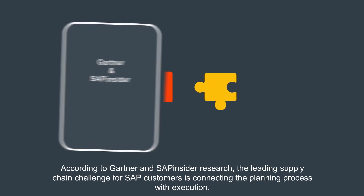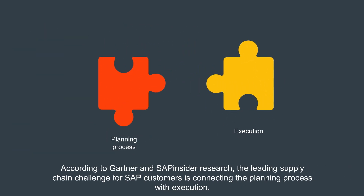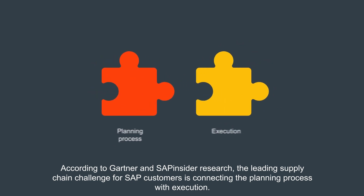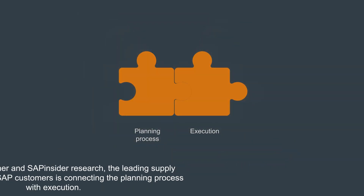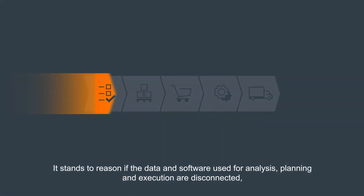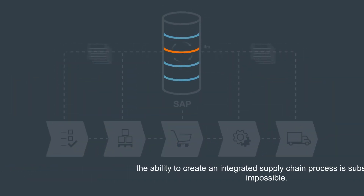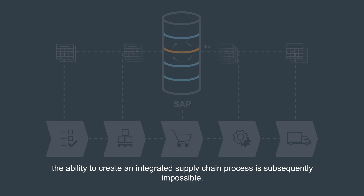According to Gartner and SAP Insider Research, the leading supply chain challenge for SAP customers is connecting the planning process with execution. Why is that? It stands to reason if the data and software used for analysis, planning, and execution are disconnected, the ability to create an integrated supply chain process is subsequently impossible.